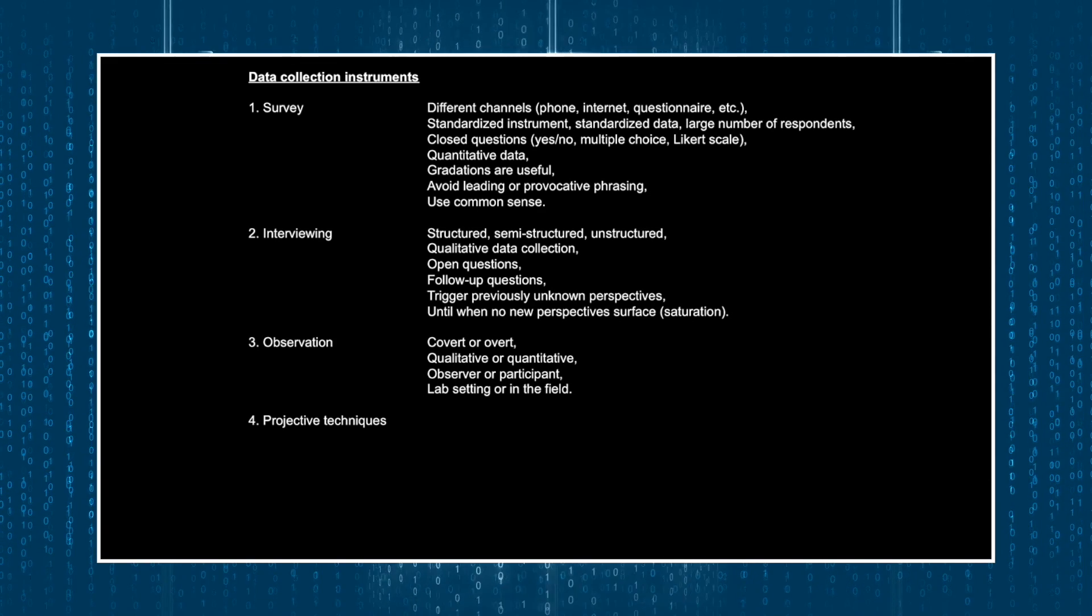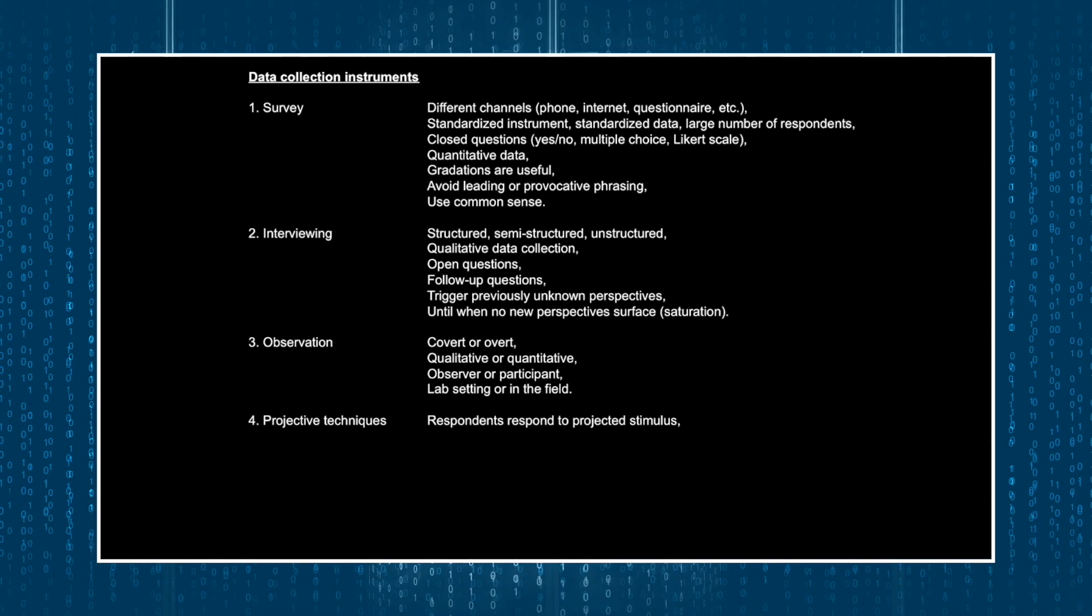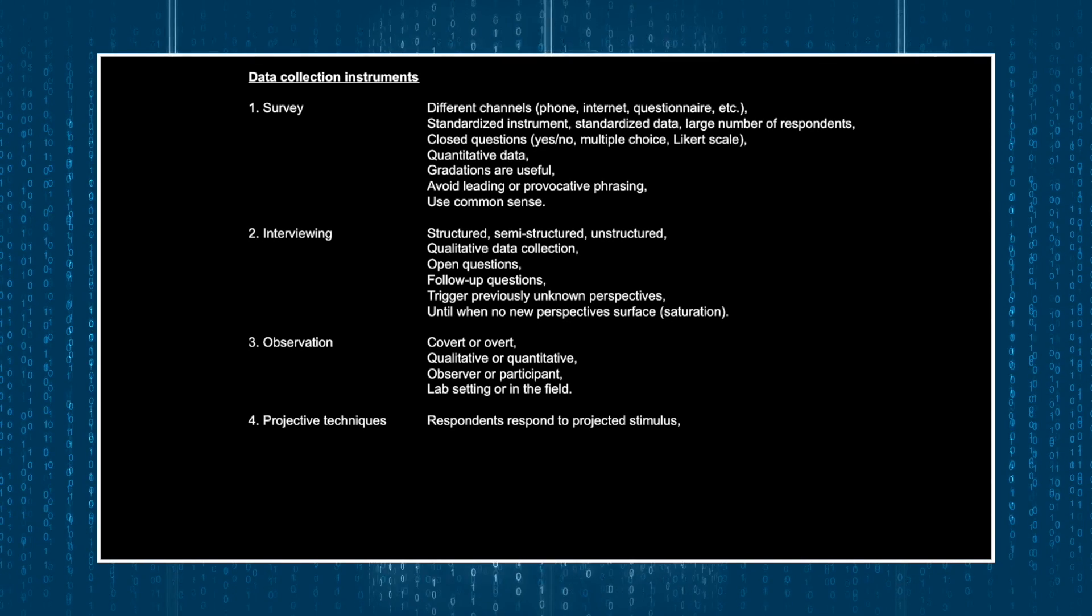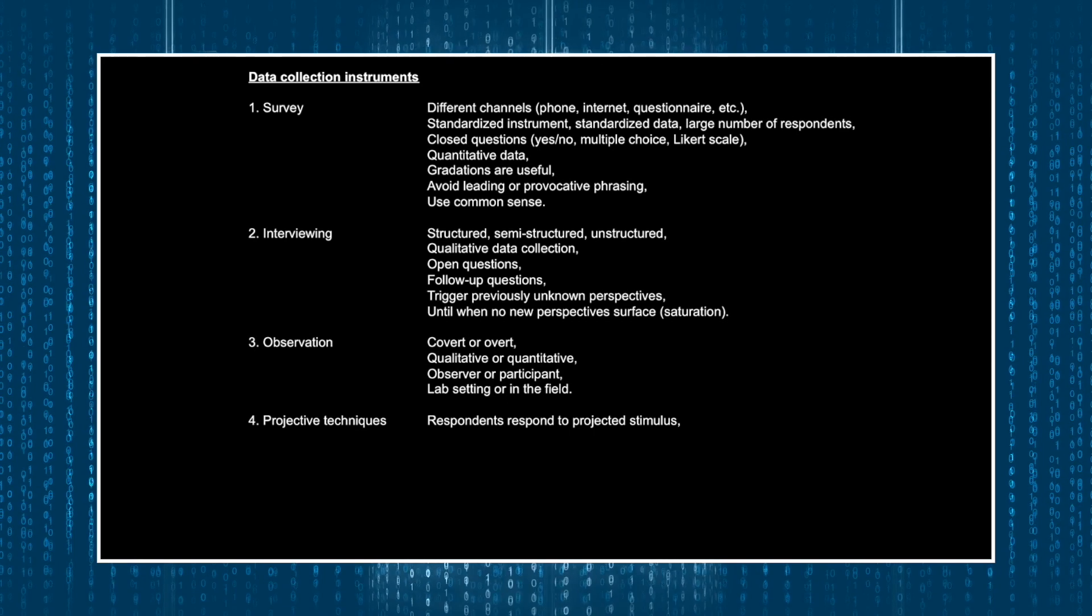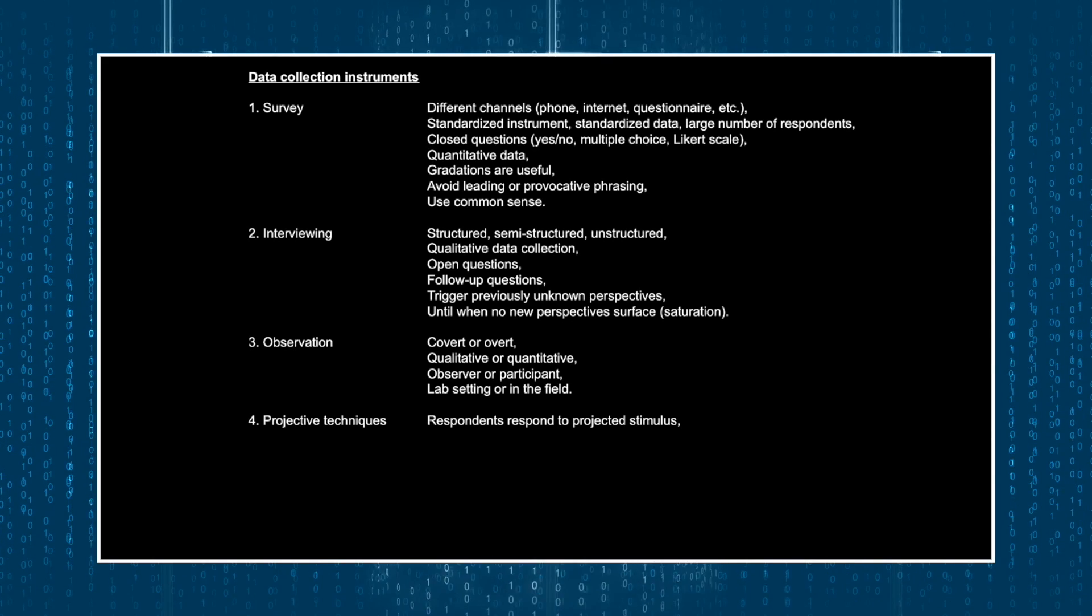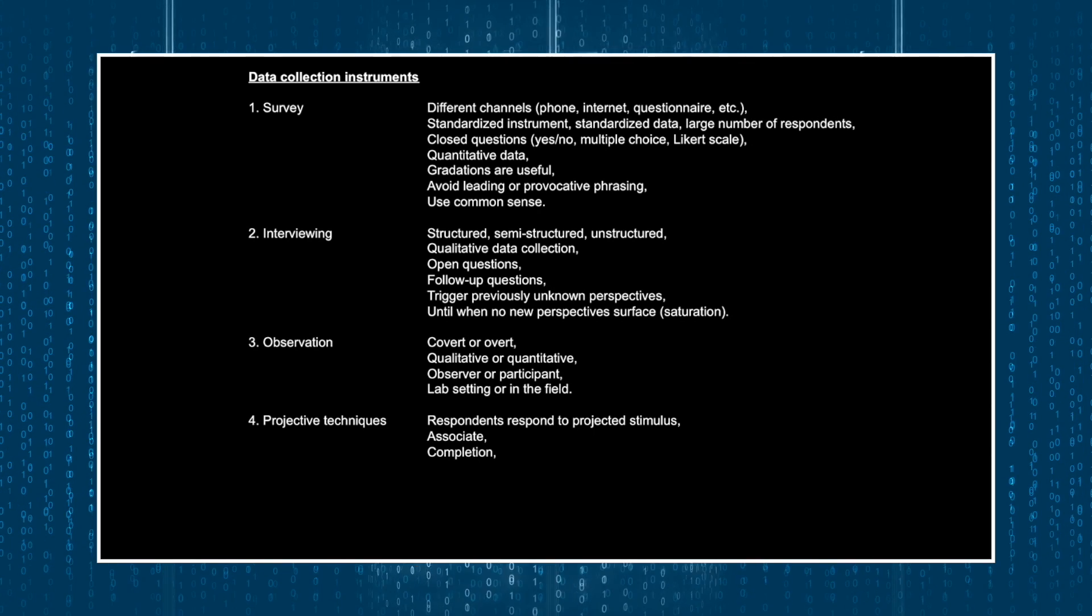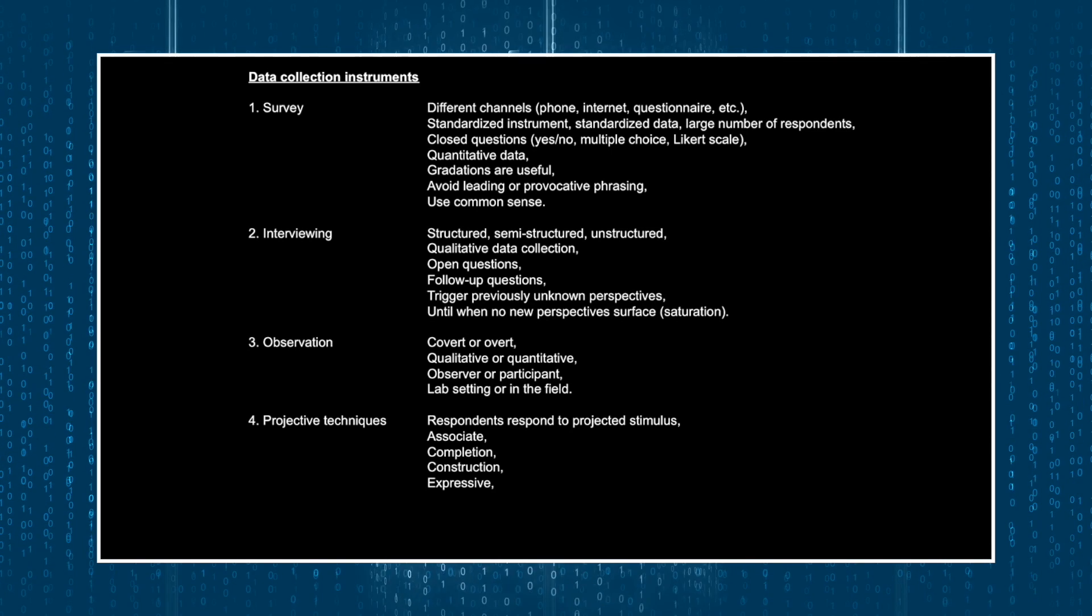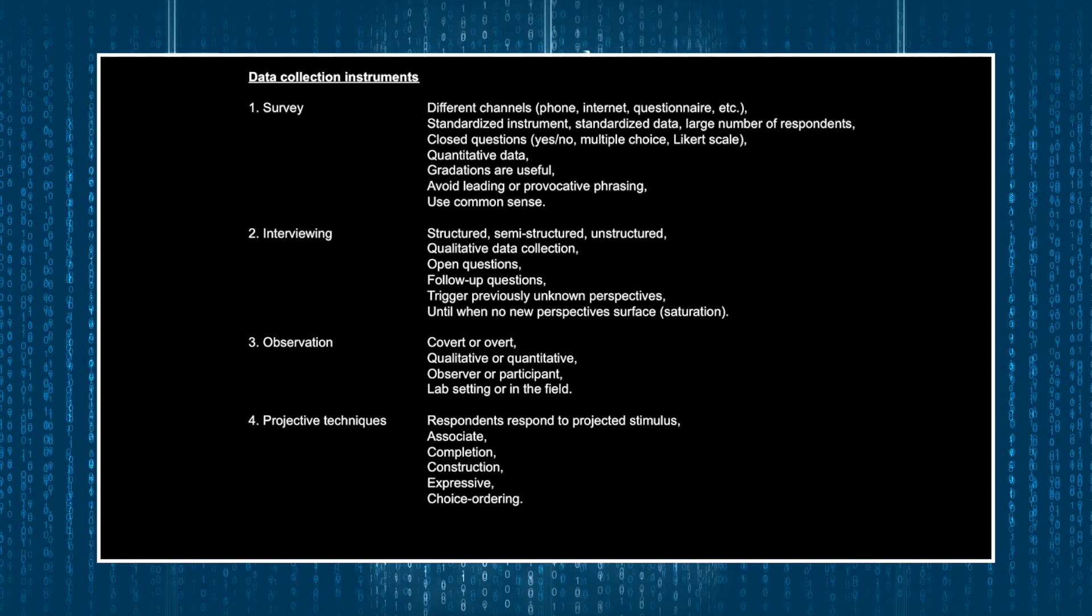The final data collection instrument that this chapter discusses is projective techniques. So the idea here is to show or project some kind of stimulus, either vague or rather explicit, to the respondent, and you ask the respondent to respond to that stimulus. For instance, if I show you an image of some sort and ask you to associate it with a hospitality-related experience and then ask you to describe that experience, this would be considered a projective technique. The Brotherton book presents this instrument as typically used for collecting qualitative data, and it mentions five main types of usage of this instrument: Associate, show a stimulus and ask the respondent to associate it with something. Completion, show the respondent a stimulus that is incomplete and ask them to complete it. Construction, ask the respondent to construct something on the basis of the stimulus shown. Expressive, ask the respondent to express their feelings and emotions on the basis of the stimulus shown. And Choice Ordering, ask the respondent to order the shown stimulus on the basis of importance or preference or some other type of criterion.